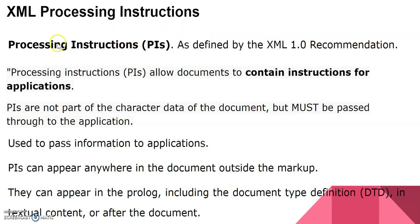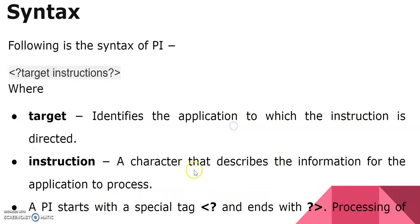Processing instructions are used to allow instructions to pass information to your application. They define what data exactly you want to pass. The syntax for a PI uses a question mark within a tag — target and instructions — and ends with a question mark. The target defines the application to which the instructions are directed and how exactly your data will be displayed.